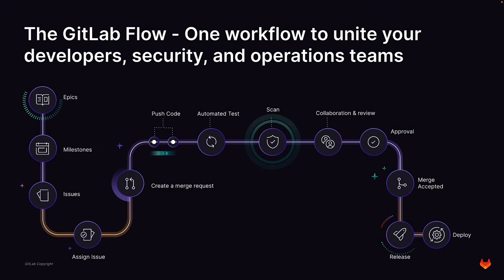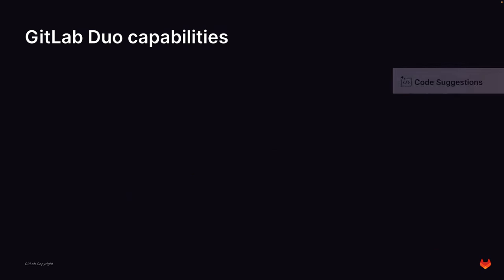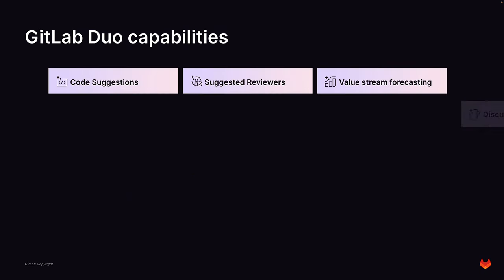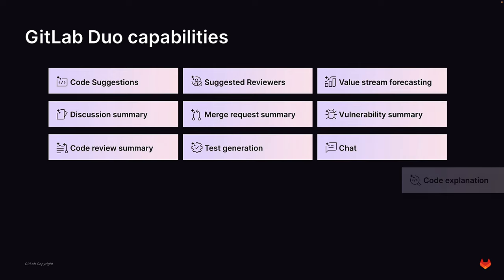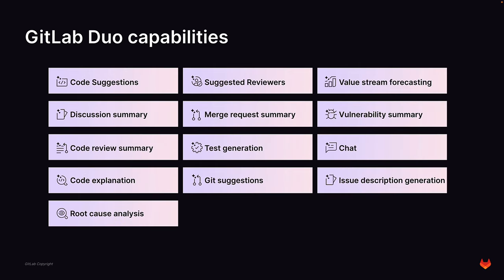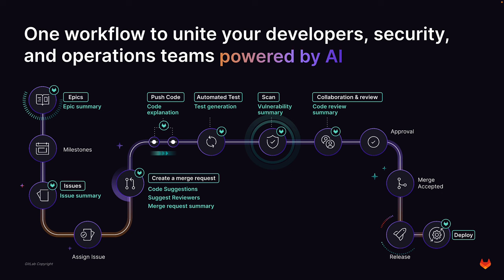GitLab Flow is a prescribed, opinionated end-to-end workflow for the development life cycle of applications when using GitLab. GitLab Duo is a powerful set of AI-powered capabilities within the GitLab DevSecOps platform. Combined, GitLab Flow and GitLab Duo can help organizations achieve significant improvements in end-to-end workflow efficiency, leading to higher levels of productivity, deployment frequency, code quality, overall security, production resiliency, and availability.